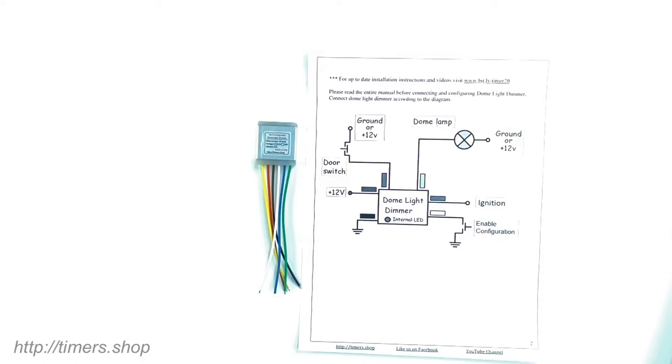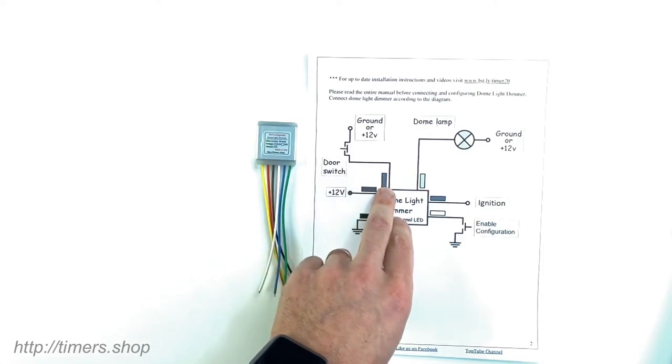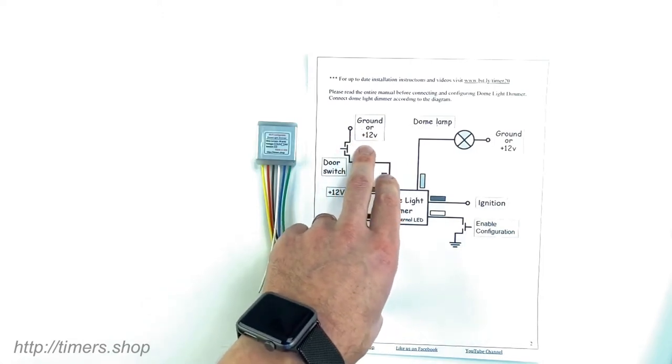All those parameters and timing can be changed via configuration. The dome light is universal—it works with either ground or positive door switches. So the door switches connected to the blue wire could be either connected to ground or 12-volt.